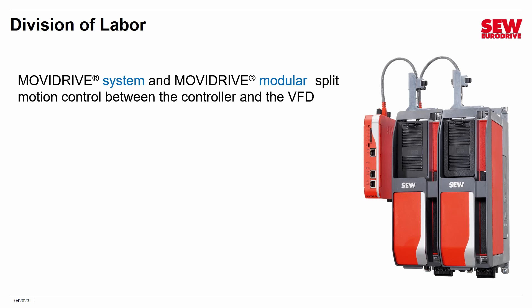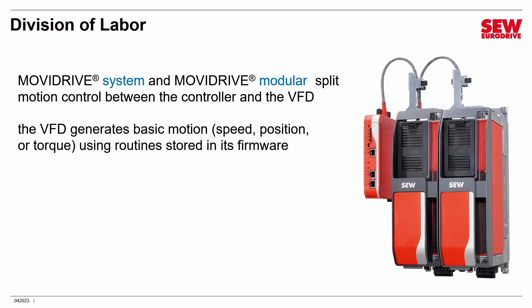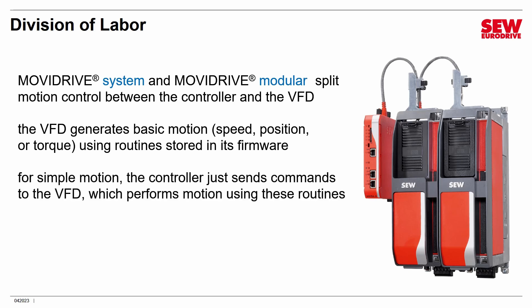The controller is doing the heavy lifting; the VFD is just doing some very simple things. For basic motion — speed, position, or torque control — you're just using those same routines stored in the Movidrive System or Movidrive Modular's firmware. What the controller does is send some basic commands saying, do these built-in firmware routines, and that's it. This is uninterpolated motion, and that doesn't put too much of a load on the controller. Those simple commands are invoking firmware routines — which we call Function Control Blocks, or FCBs — and that's really what we're here to talk about.